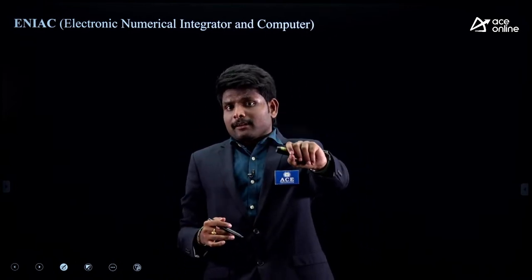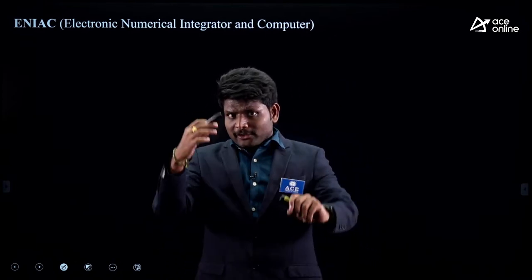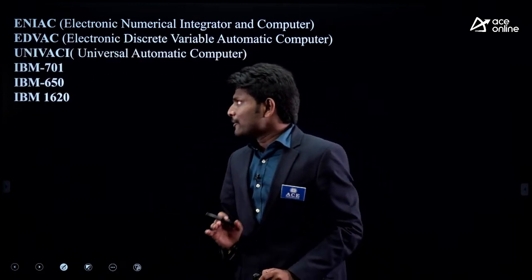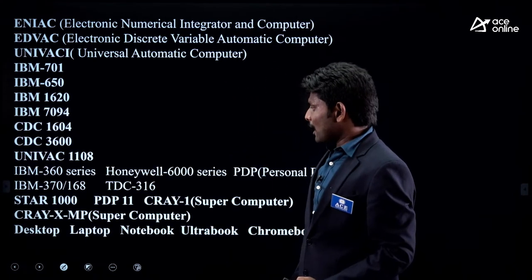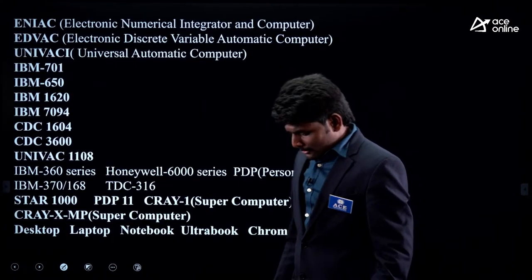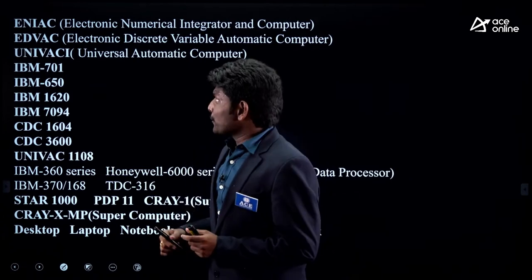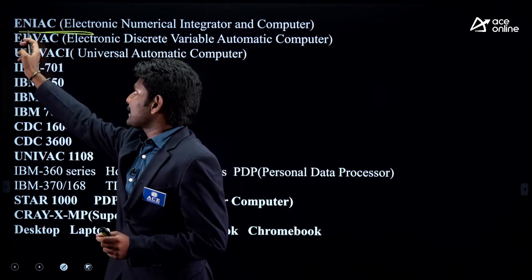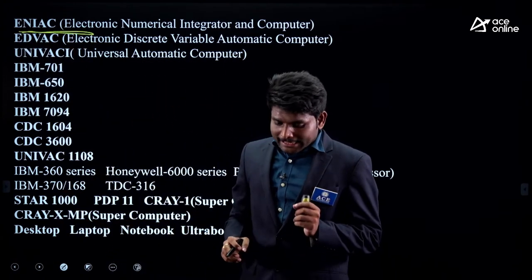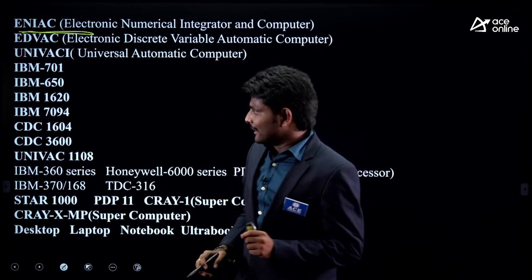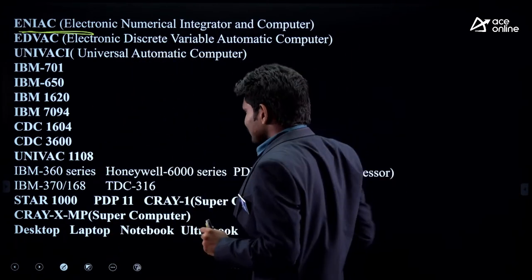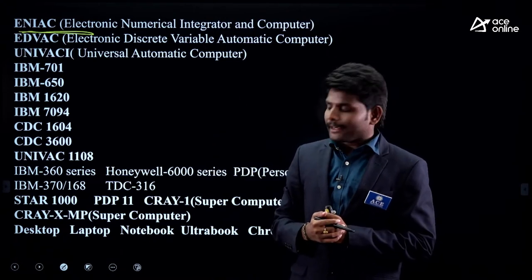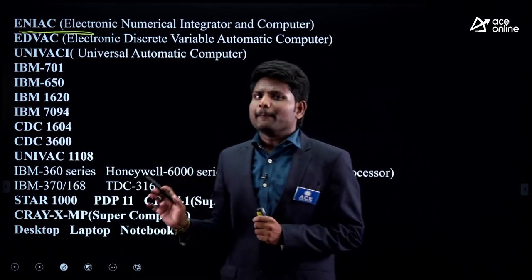Apart from the five generations table, there's another thing: they ask about example computers of each generation. I have listed more than 20 computer names here. For example, they asked: 'Which is the first ever computer that has been generated?' — ENIAC. Next year, instead of ENIAC, they may ask any of these other computer names.